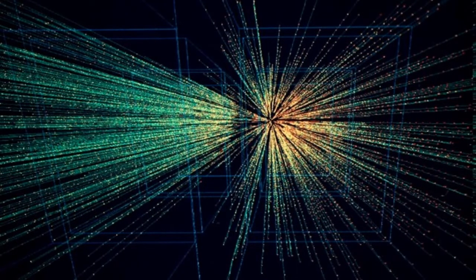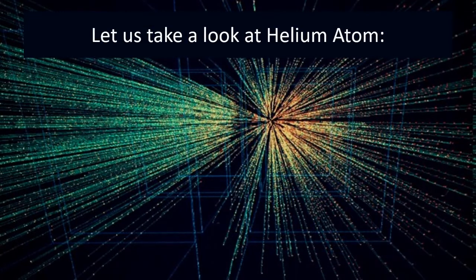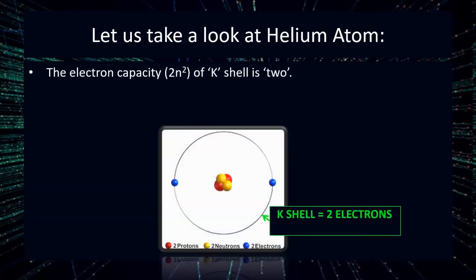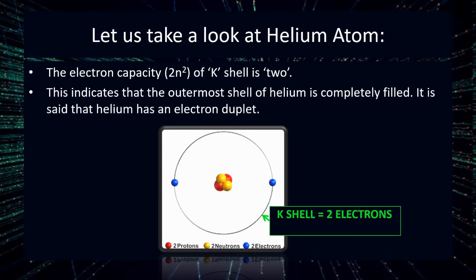Let us take a look at the helium atom. Helium atom contains two electrons and it has only one shell. Since the capacity of K shell is two electrons, both electrons of helium are accommodated in the K shell. This indicates that the outermost shell of helium is completely filled, and this condition is called an electron duplet.